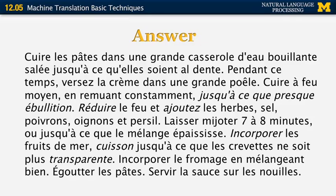The last example is a problem with agreement. 'Courgette' is plural, but it's listed as 'transparent,' which is singular — it should have had an extra S at the end to indicate plural. In French, adjectives and nouns have to agree with each other in number and gender, and in this example we have disagreement.